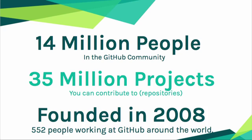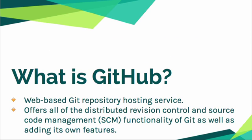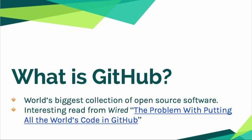There are about 14 million people in the GitHub community running about 35 million projects — projects that you can contribute to, essentially 35 million repositories on GitHub. It was created in 2008, and GitHub themselves has about 550 people working on GitHub itself. GitHub is a web-based Git repository hosting service. It offers all of the version controls that Git has, but it also has a few other features. It's pretty widely believed that they're the biggest collection of open source software.